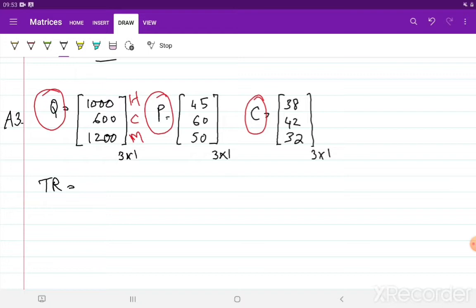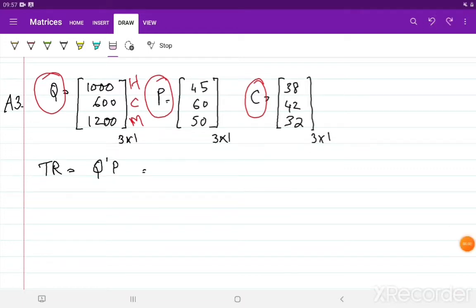So I can do that as... So total revenue would be price times quantity of each type of item. If I want price of hamburger to be multiplied by the quantity of hamburger, price of cheeseburger to be multiplied by the quantity of cheeseburger, and price of milkshake to be multiplied by quantity of milkshake, I will need to put Q as a row vector.